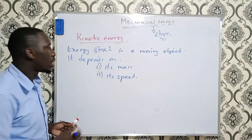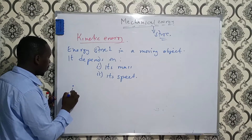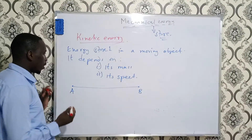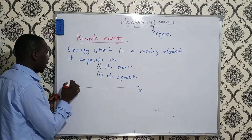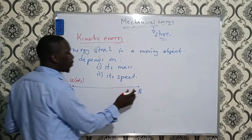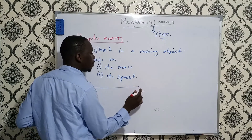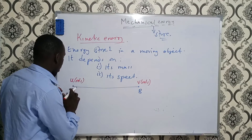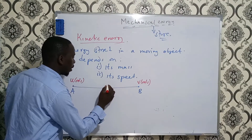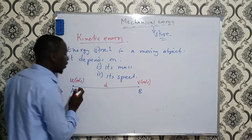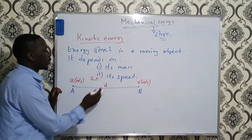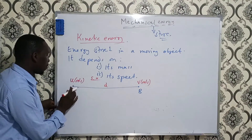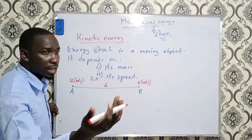To show how we calculate kinetic energy, consider a body moving from point A to point B. We assume that at point A its initial speed is u meters per second, and at point B the speed is v meters per second. The displacement from A to B is d. For a body to move from point A to point B, work must be done.